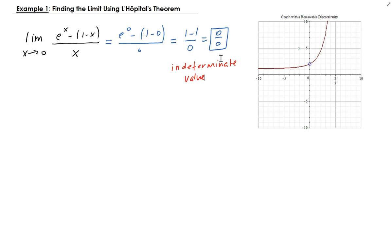Whenever you get one of these indeterminate values after doing a direct substitution, that is when you want to apply L'Hôpital's Theorem. The theorem states that you take the derivative of the top function divided by the derivative of the bottom function.